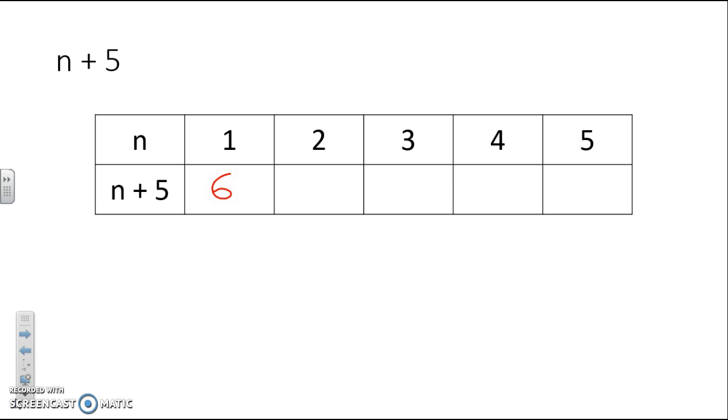The rest of the table is 7 because 2 plus 5 is 7. 3 plus 5 is 8. 4 plus 5 is 9. And 5 plus 5 is 10.